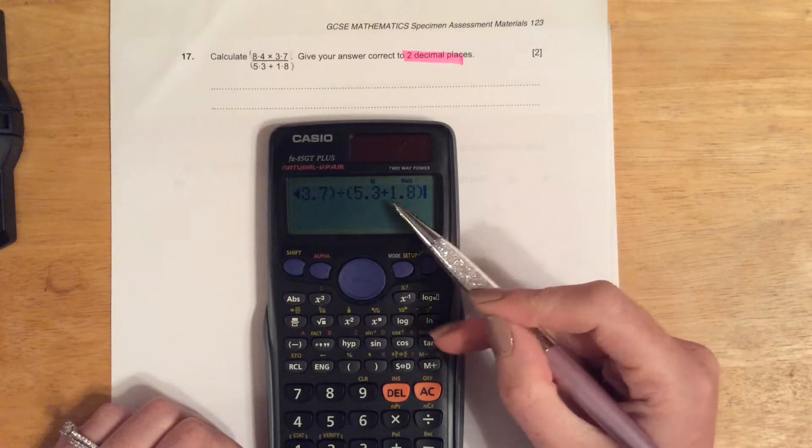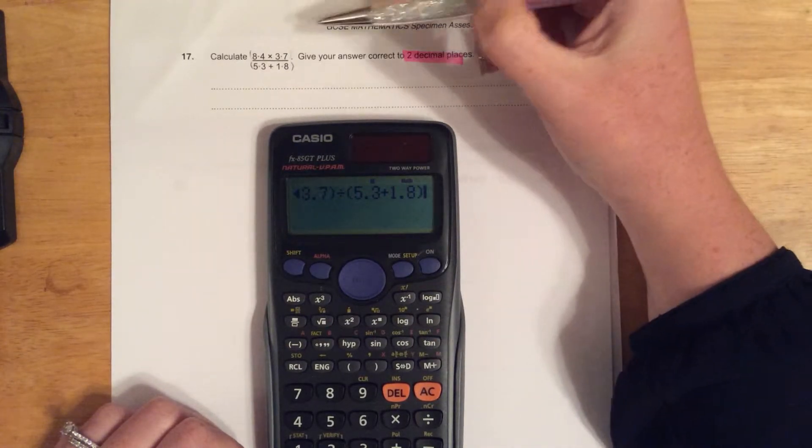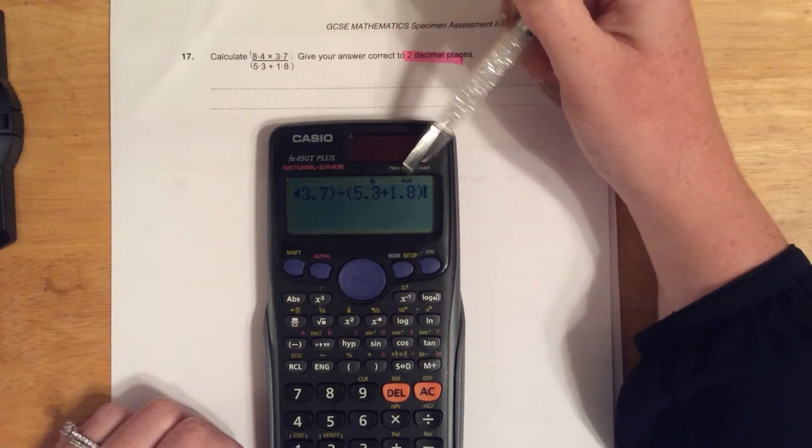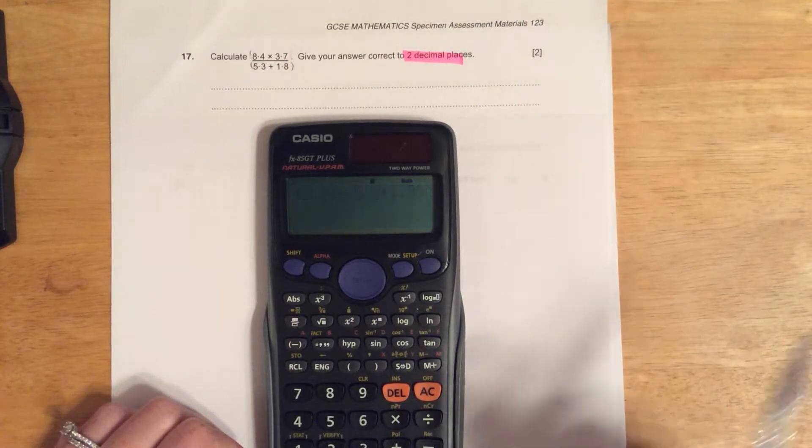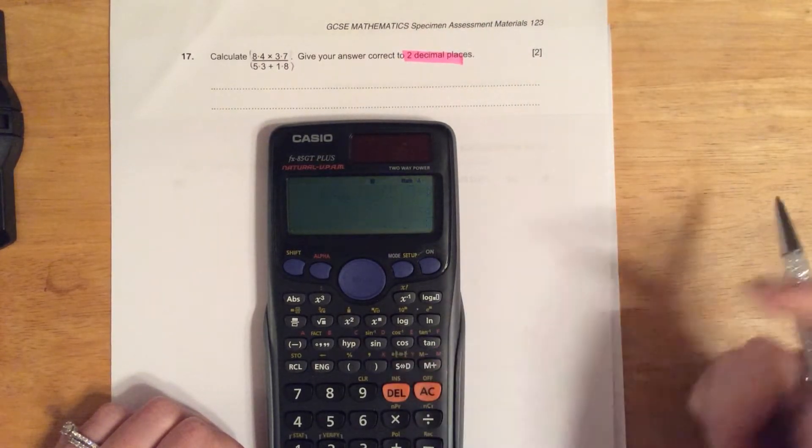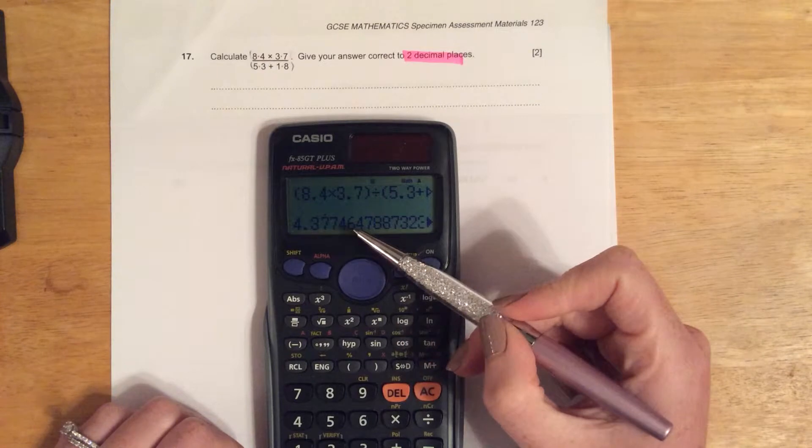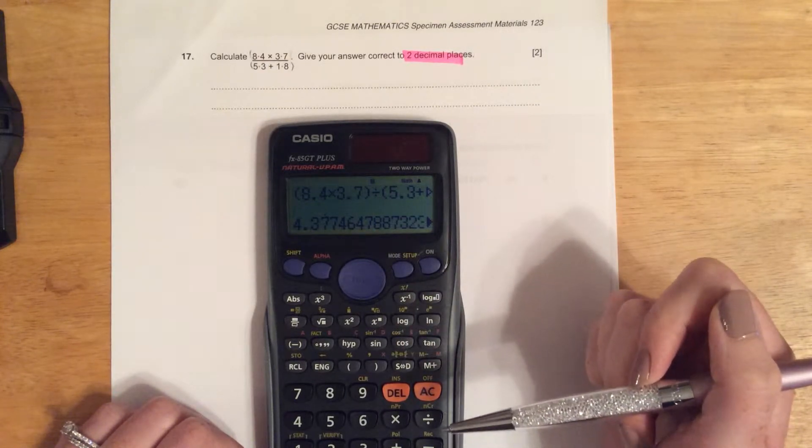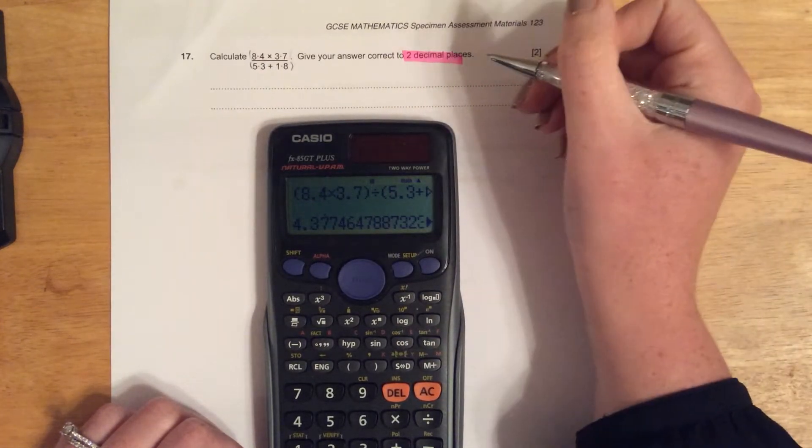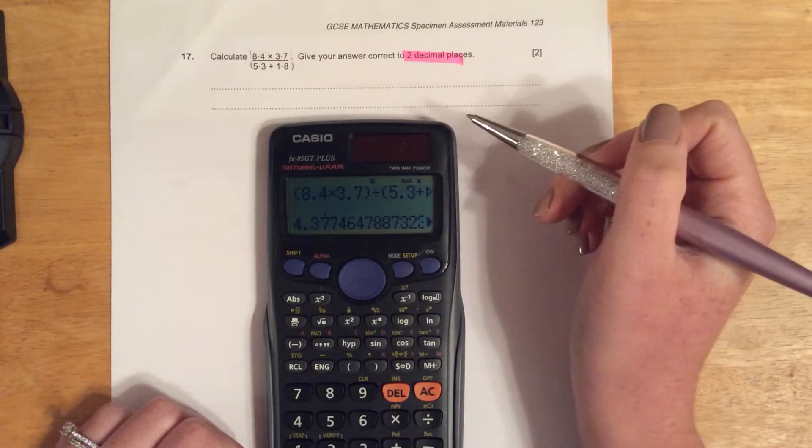If you forget the brackets, then your answer may be incorrect. Double check you've written it correctly, and we have, and equals. So you should have this on your calculator then.